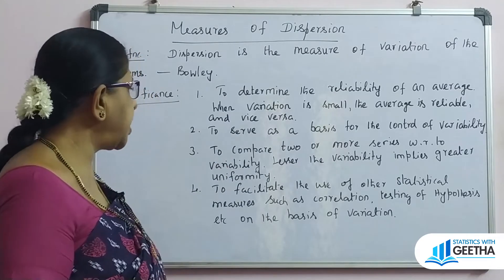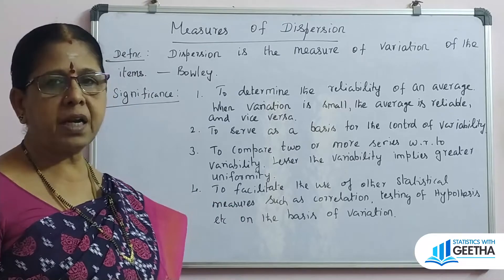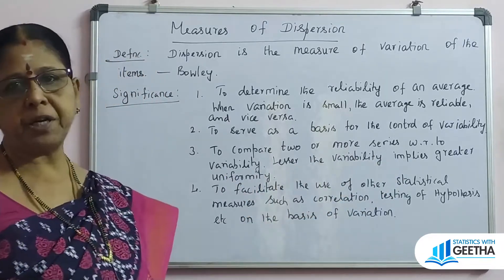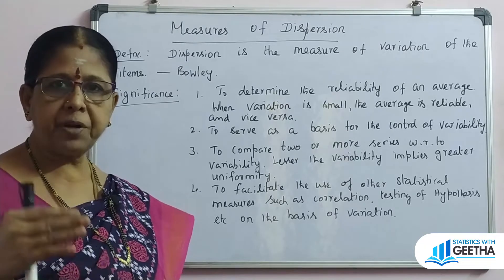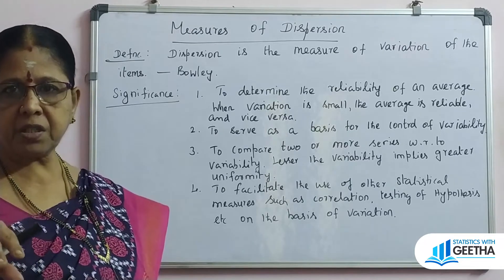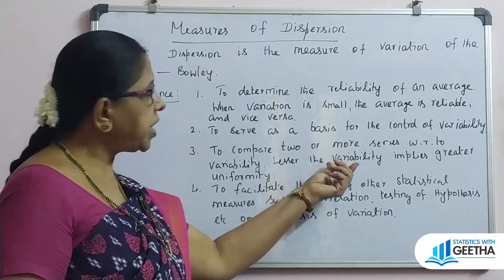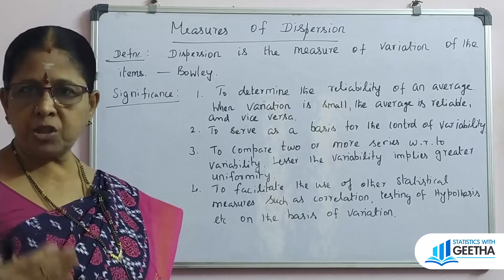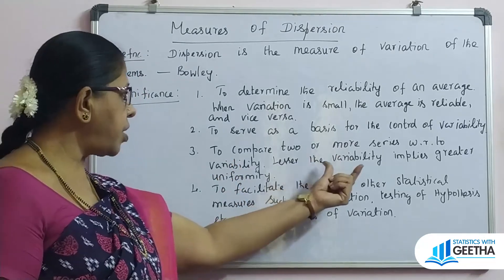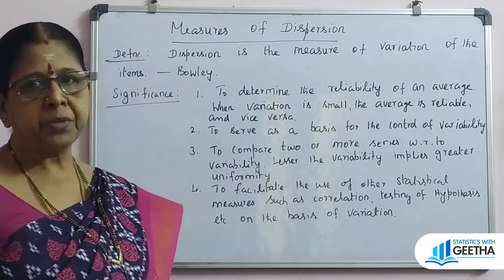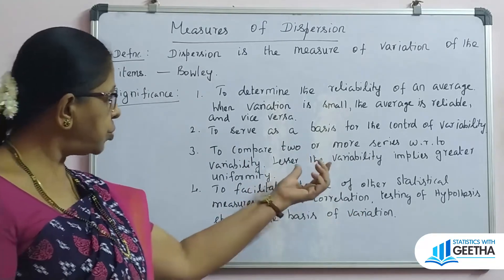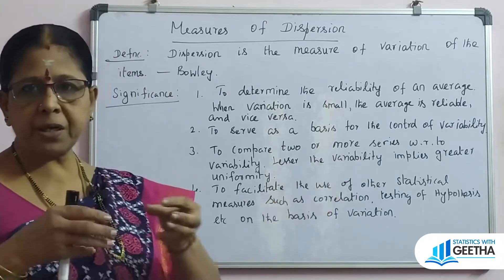To compare two or more series with respect to variability — if there are two or three datasets, you can compare them at one time and see which is better. Lesser variability implies greater uniformity, homogeneity, and consistency. Greater variability implies lesser uniformity, lesser homogeneity, and lesser consistency. We should consider that the variability is lower than that particular average.